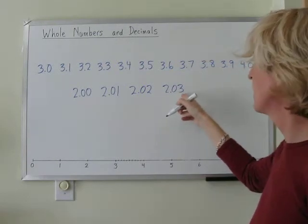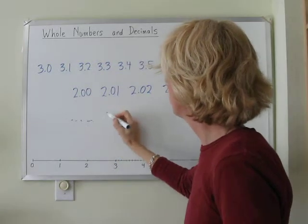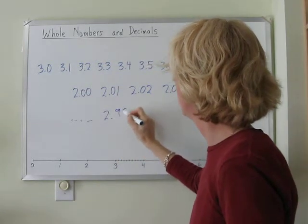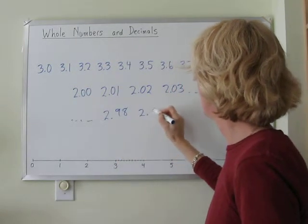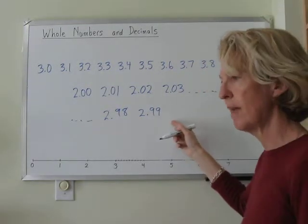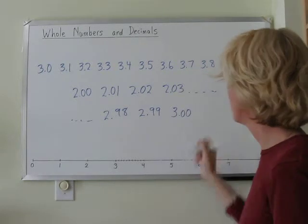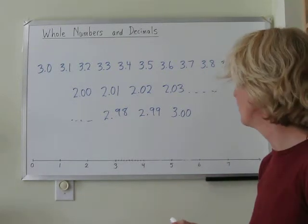because we're going to have to count all the way up to two point nine eight, two point nine nine, and what would our next little step be? Three zero zero. That's right, onto our whole number of three zero zero. Three point zero zero.